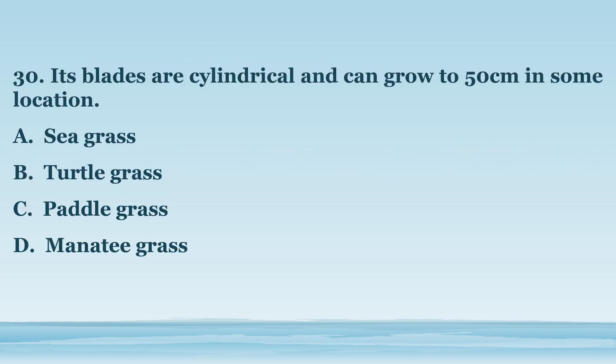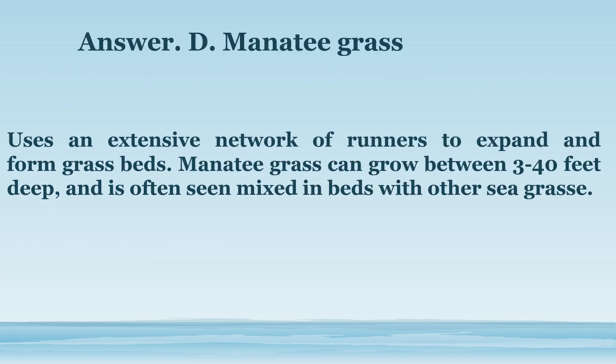Number 30. Its blades are cylindrical and can grow to 50 cm in some locations. A. Sea grass. B. Turtle grass. C. Paddle grass. D. Manatee grass. The answer is letter D. Manatee grass. Uses an extensive network of runners to expand and form grass beds. Manatee grass can grow between 3 to 40 feet deep and is often seen mixed in beds with other sea grass.